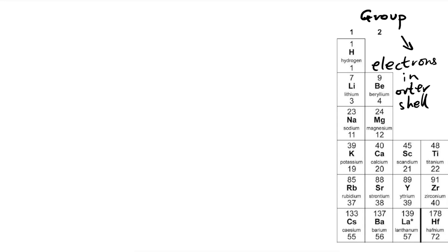And we know that on the right-hand side of the periodic table we also have other elements: three, four, five, six, seven, eight - or zero, depending on which way you think about it.